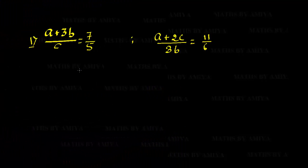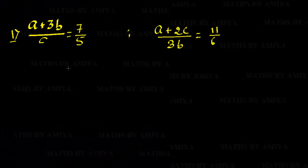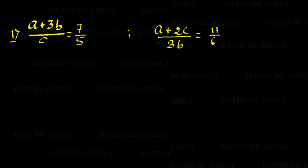Hello friends. We have seen in our first few videos about ratio — when we have a relation, how we merge the ratio by cross multiplying the relation value. But if we are not able to find a relation, how can we merge ratio? For example: (a + 3b) / c = 7/5 and (a + 2c) / 3b = 11/6. I am not able to find any relation between these two ratios very easily.